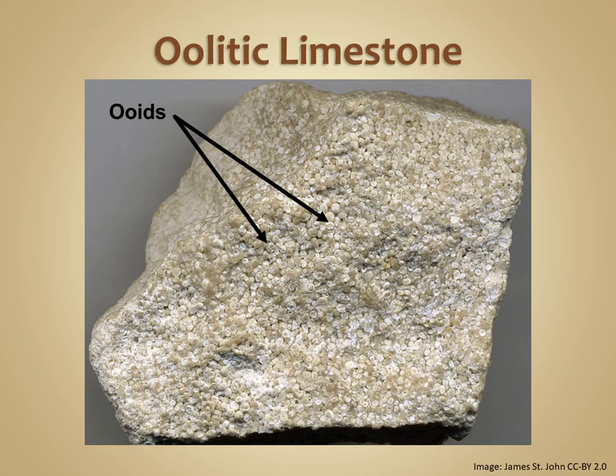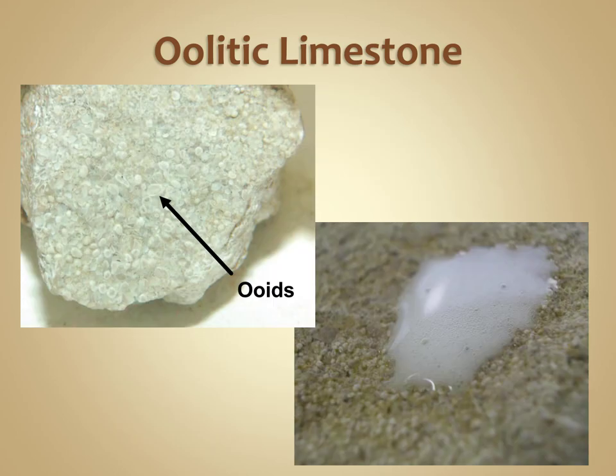As tide currents move in and out, they roll these small ooids back and forth, allowing them to maintain a nearly spherical shape as they grow. If many of these ooids are deposited and cemented together, they can form oolitic limestone. In this photograph you can see the small spherical ooids that make up the matrix of this oolitic limestone. Because these ooids are made of calcite, they too will fizz in the presence of acid.